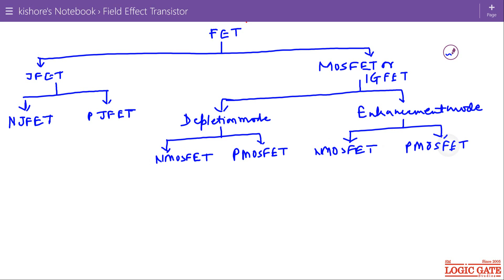Now I will draw the circuit symbols for these transistors. This is the symbol for N JFET and in case of PJFET, direction of arrow is reversed.